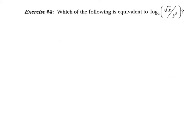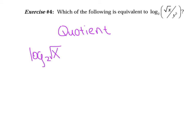Now we're going to move a bit faster. What rule are we using here? We're going to use the quotient rule right away. I'm going to say log base 2 of radical X minus log base 2 of Y to the fifth power. Handwriting is going to be super, super important here.